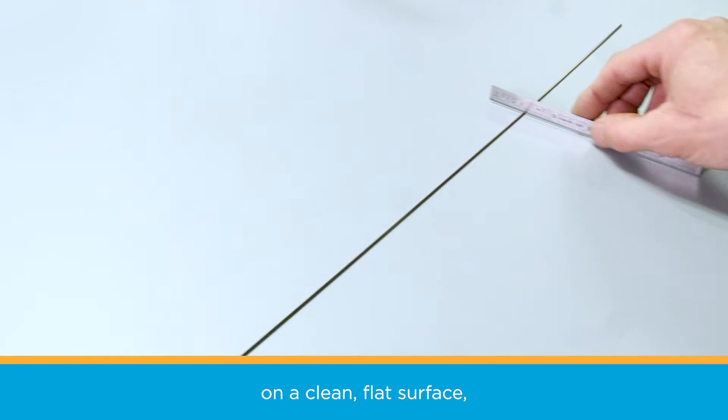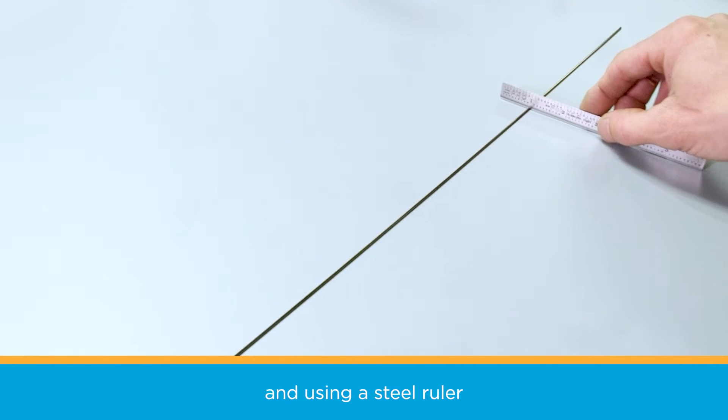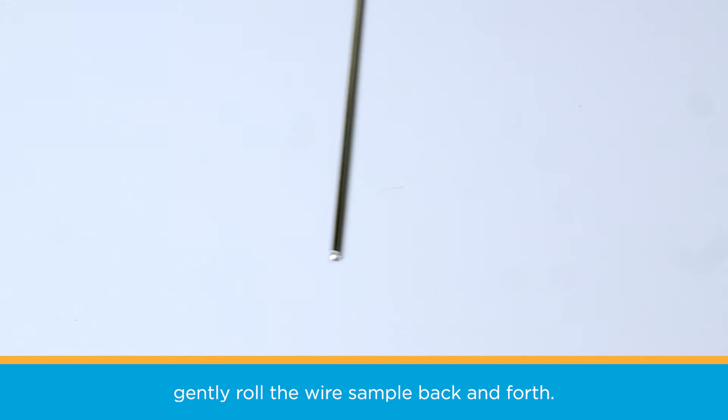Now put your sample on a clean flat surface. Using a steel ruler or anything with a straight edge, gently roll the wire sample back and forth.